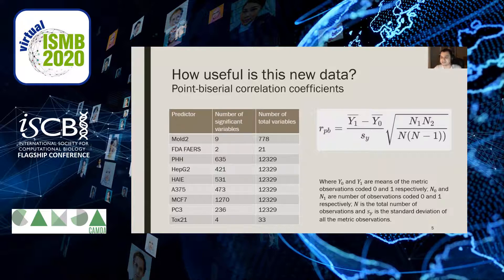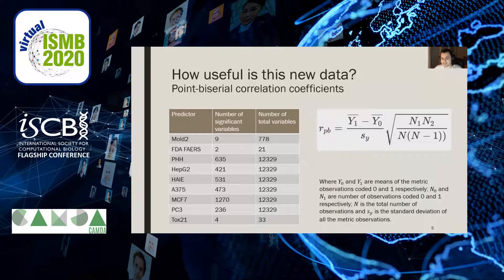The first question we had upon receiving this data is how useful is the new data in this iteration compared to the previous one. We decided to calculate the point-biserial correlation coefficients, which gives a way to measure the relationship between a binary variable and a continuous one. We calculated this coefficient for each variable against DILI 1 for simplicity, using a p-value cutoff of 0.05 to determine significance. This table displays those results. In general, the cell expression data is definitely the most important when it comes to predicting at least DILI 1. One surprising finding was that the MOLD2 chemical descriptors only had 9 out of 778 variables considered significant — interesting given that Zhu et al. used chemical descriptors to great effect, which warrants further investigation.